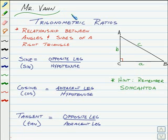Welcome, everyone. I'm Mr. Vaughan, and this is a lesson on trigonometric ratios. Now, these ratios basically tell us of a relationship between the angles and the sides of a right triangle.